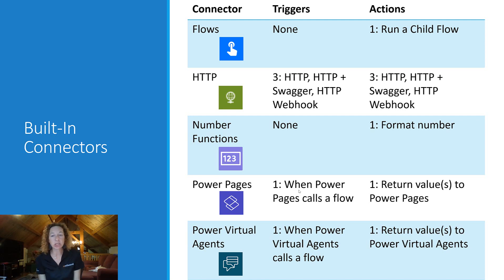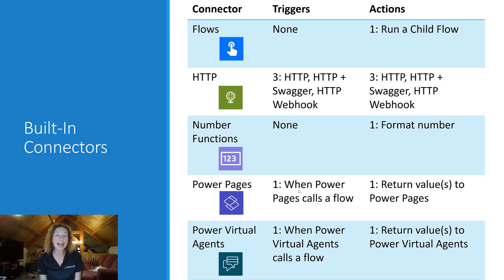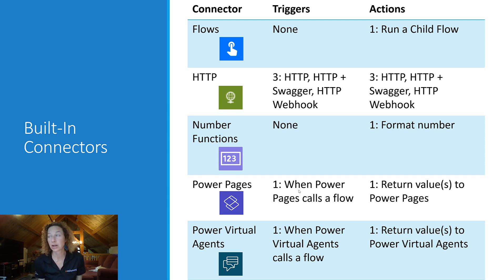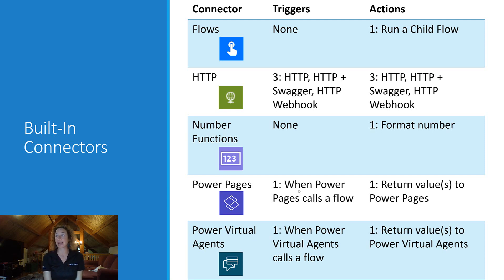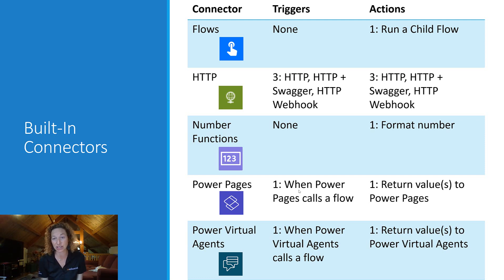Then we come into the more technical world with HTTP. There are three actions and three triggers: HTTP, HTTP plus Swagger, and HTTP Webhook. Number Functions has no triggers and one action, which is to Format Number. This is valuable if you want to get a specifically formatted number to insert into other areas or actions in your flow.